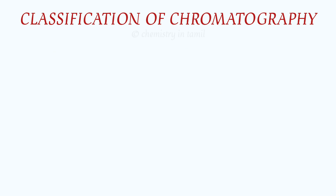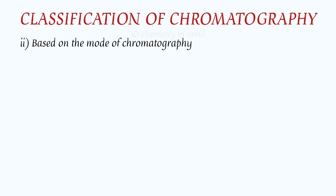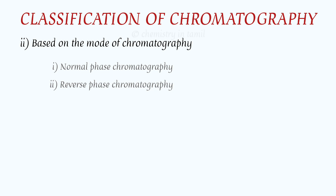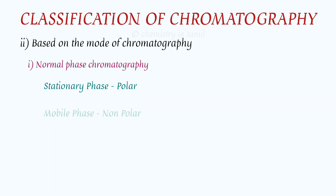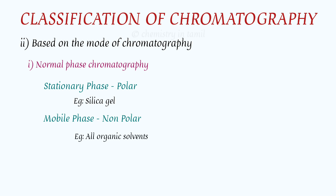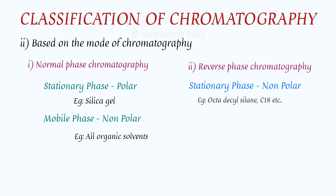The second classification is based on the mode of chromatography. There are two types: normal phase chromatography and reverse phase chromatography. In normal phase chromatography, the stationary phase is polar — for example, silica gel — and the mobile phase is non-polar, such as organic solvents. In reverse phase chromatography, the stationary phase is non-polar, for example octadecylsilane (C18), C6, or C8.